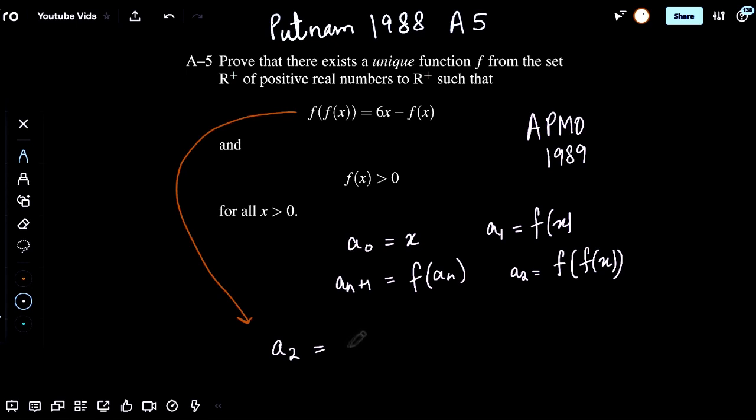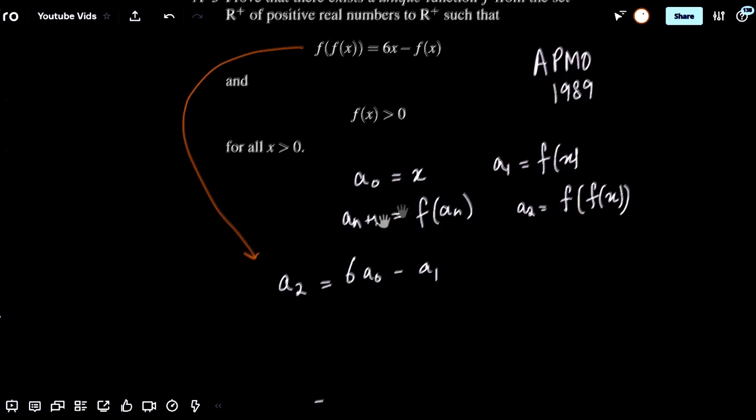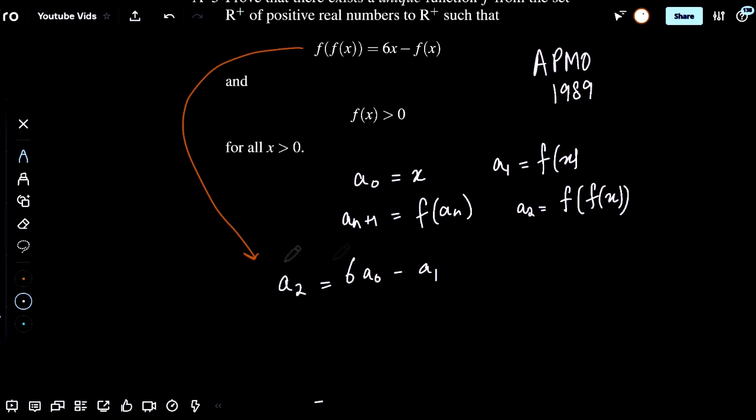A_2 equals 6 A_0 minus A_1. How do we go about solving for A_0, A_1, or A_2 even? Note that we're trying to solve for A_1 in particular. Well, we can see that this is just a general case of the recurrence relation A_{n+2} equals 6 A_n minus A_{n+1}.